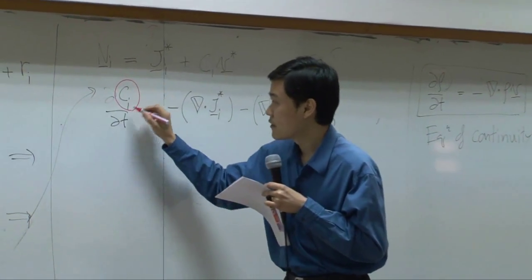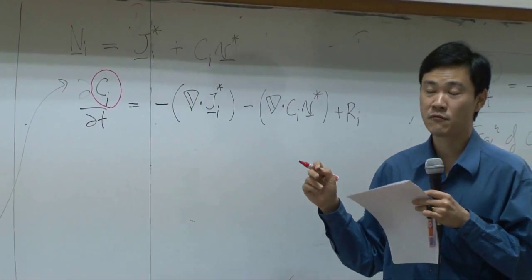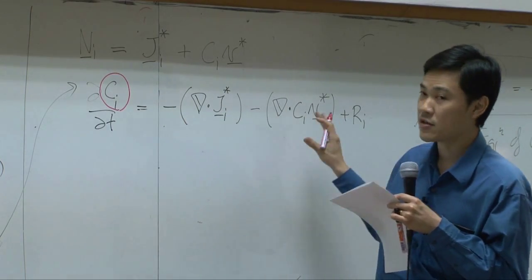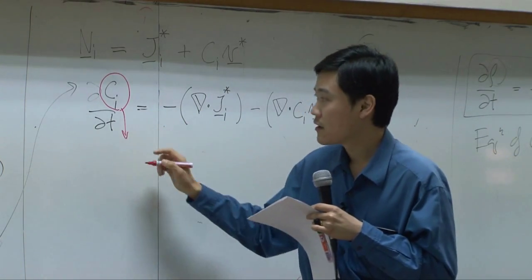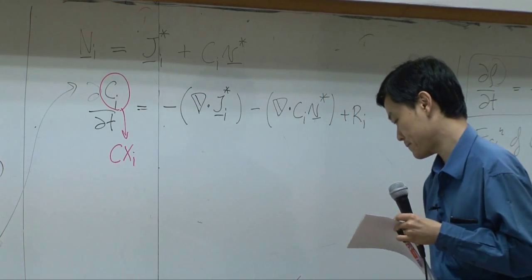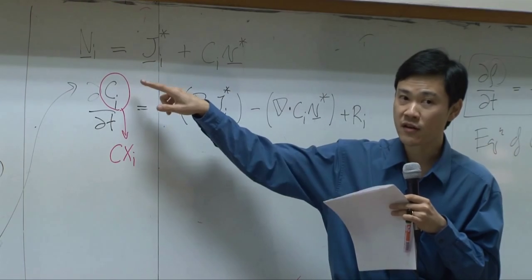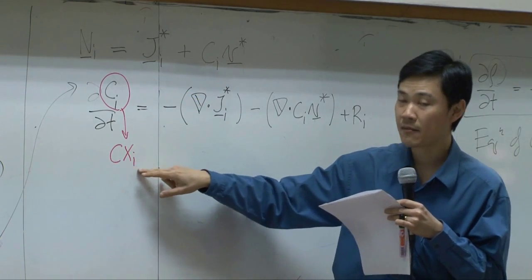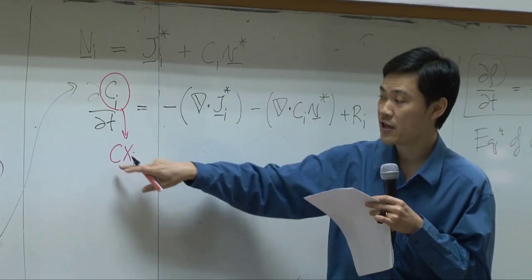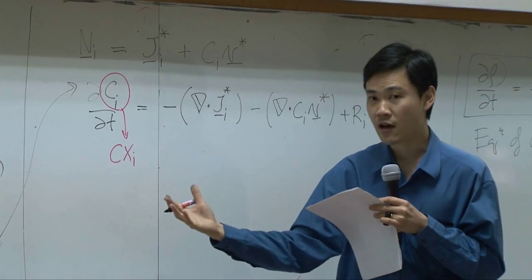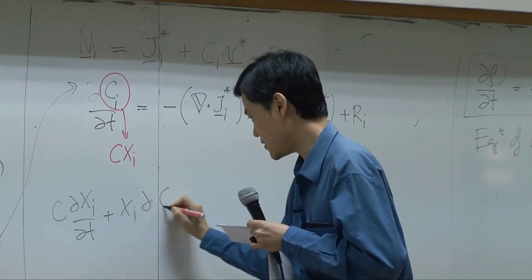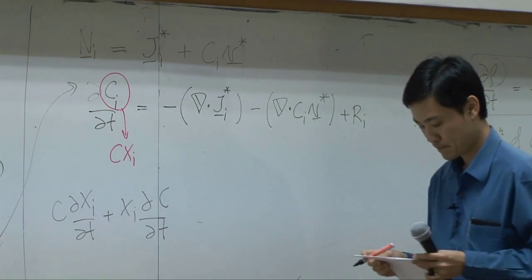Again, this is the same thing as mass equation earlier, just converted into molar basis. From here, normally, as I said, when we use the equation, we normally prefer molar basis because it is more convenient for use. So I'm going to look into this equation a little bit more detail. Ci itself is C times xi. This is concentration of specie i equal to total concentration times the mole fraction, right? So that means this differentiation is differentiation of the product. You can split it off to get C dxi/dt plus xi dC/dt.